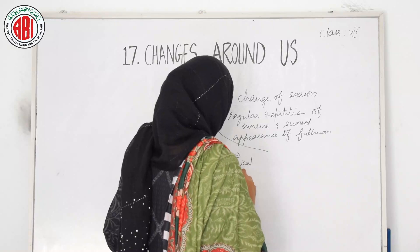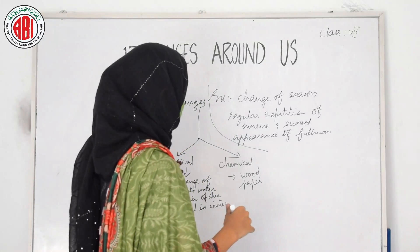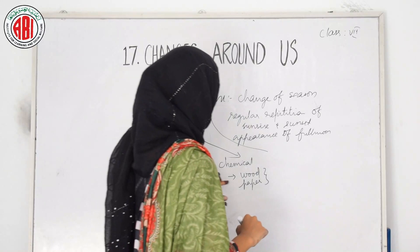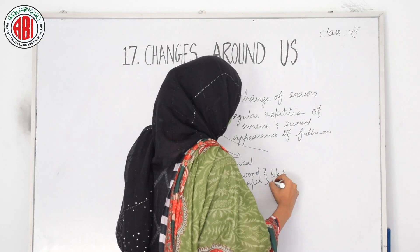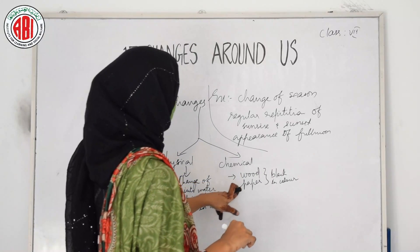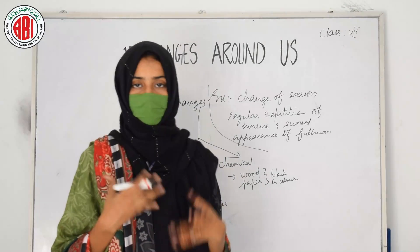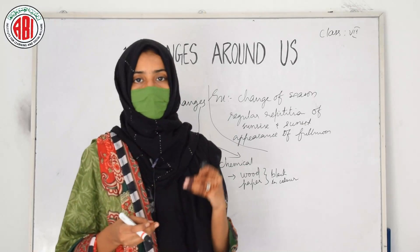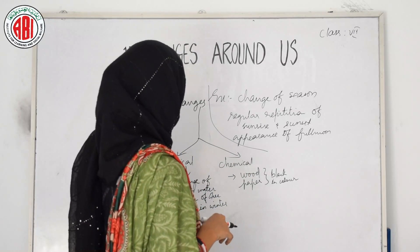Under chemical changes, when we burn wood or a piece of paper, these materials form a new product which is black in color and different from the original one. So burning of wood or paper produces a new product — this is called a chemical change. Whenever we get a new product, that change is called a chemical change. When there is a change in properties but no new product forms, that is called a physical change.